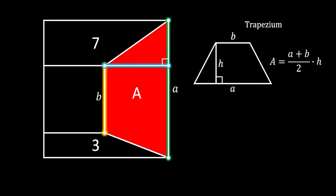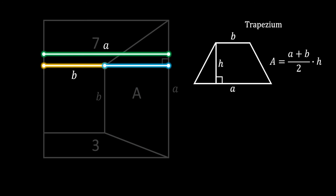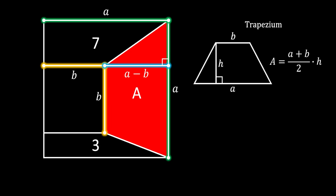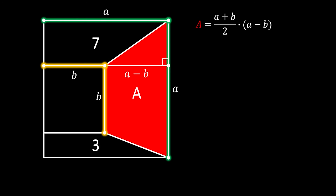We can do this by labeling the horizontal side of the big square as a and the small square as b. The blue line, which represents the height of our trapezium, must be equal to the difference between the lengths of the two sides of our squares. So the red area of our trapezium equals (a + b) / 2 times the height, which equals a minus b.